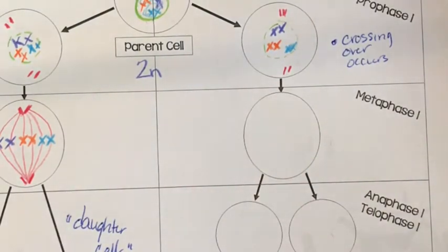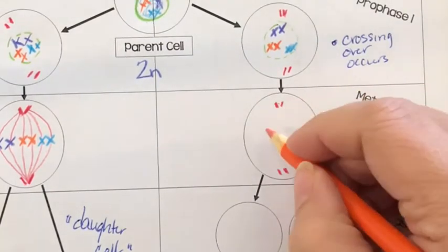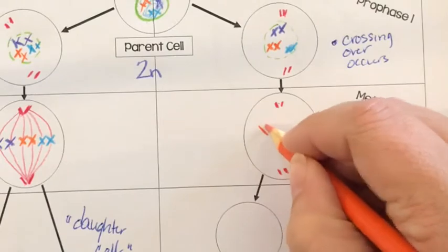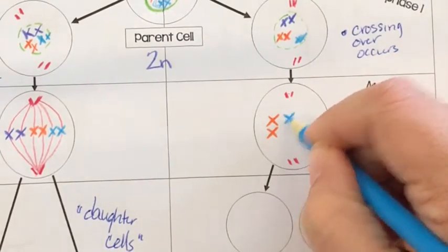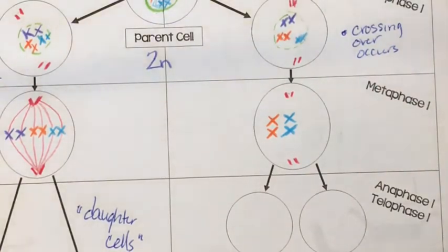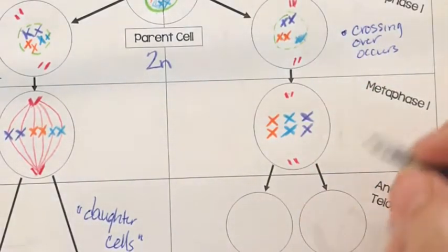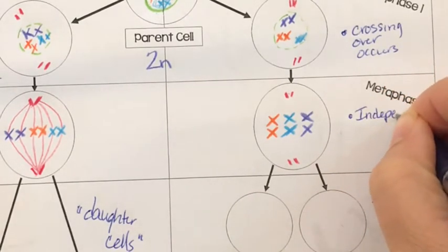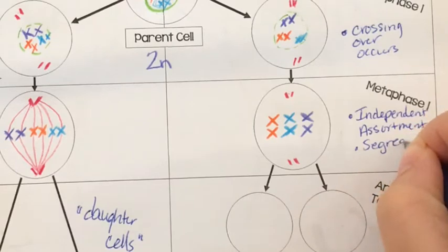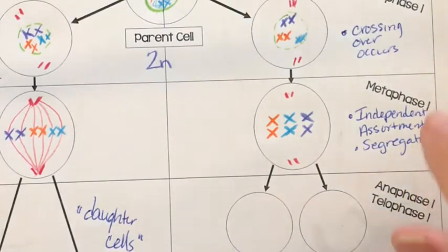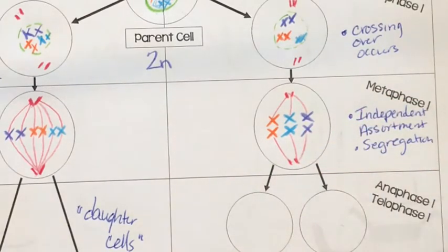And then when they line up in the middle, this time when they're lining up, instead of forming a straight row, we actually see the X's buddy up with each other. And so we've got one from mom on one side, one from dad on the other. Now whether they line up with mom on one side, dad on the other, or dad on one side, mom on the other is completely random. And so this is where we get the law of independent assortment. And we also have the law of segregation. So where they line up in a random way, and then they're going to separate from each other, pretty similar to how they did before. And when we get into genetics, this stuff will be a lot more important. So I'm just trying to kind of intro you to the vocabulary now.